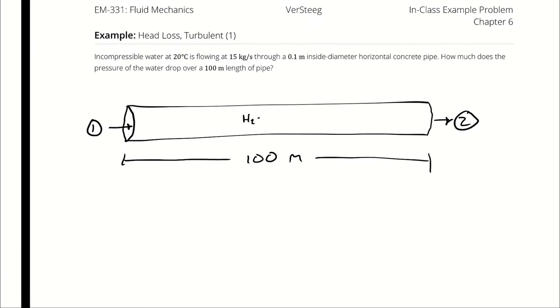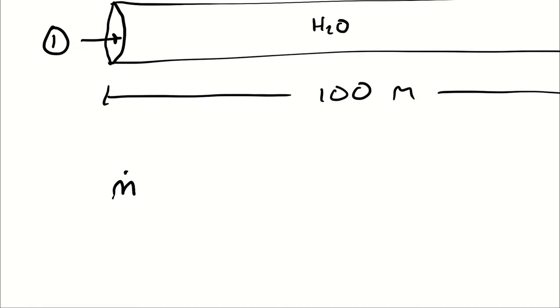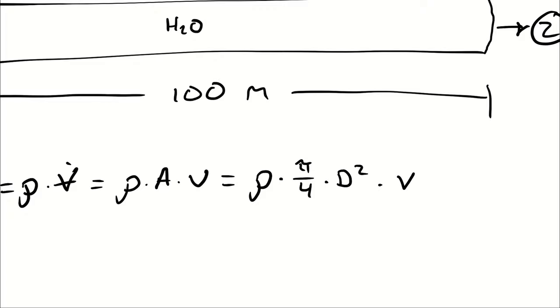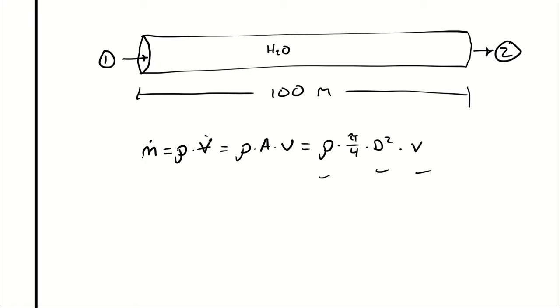I'm going to define the inlet and outlet as state points one and two respectively. I have water at 20 degrees Celsius which means I can look up its properties in table A1. I know an inner diameter applicable across the entire pipe at both states one and two. That allows me to deduce things like if it's flowing steadily, the mass flow rate has to be the same at one and two. If it's incompressible, the density has to be the same at one and two, therefore the volumetric flow rate has to be the same. If the cross-sectional area is the same, the average velocity also has to be the same.